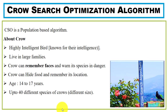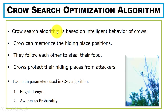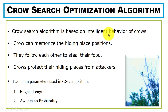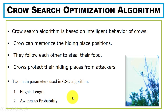Crow Search Optimization is a population-based algorithm based on the intelligent behavior of crows. Crows can hide food in hiding places and memorize the hiding place positions. They can follow each other in order to steal food, and they can protect hiding places from attackers. This algorithm has two main parameters: the flight length and the awareness probability, which we will see in the upcoming slides.